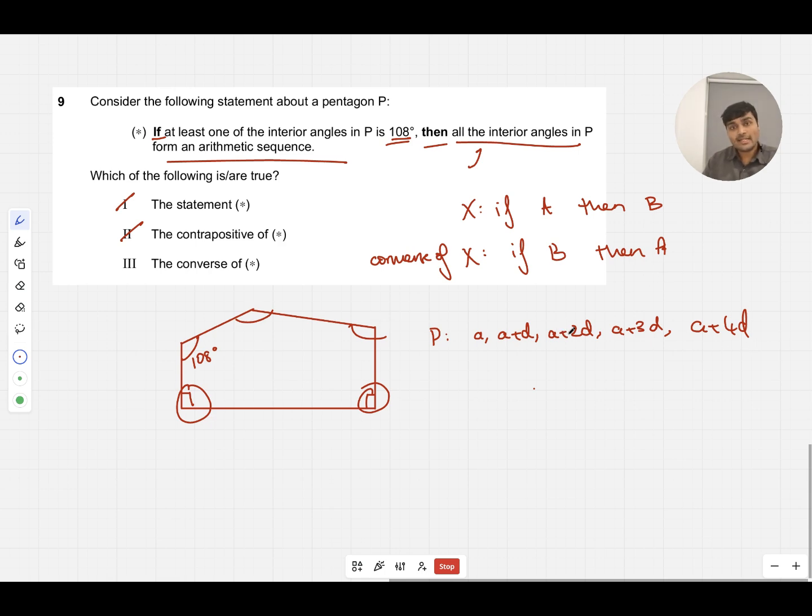We know that in a pentagon angles add up to 540. If I add these up I get 5a + 10d = 540 degrees. Dividing through by 5 on both sides I get a + 2d = 108 degrees, which very conveniently is one of our angles. So I can say for sure that at least one of the angles in P is 108.